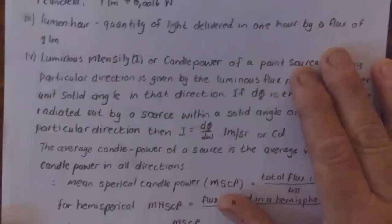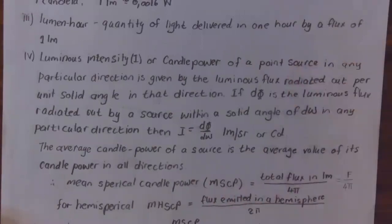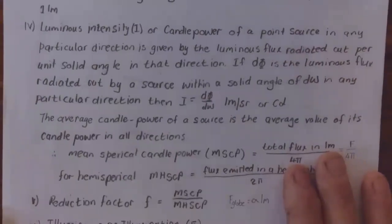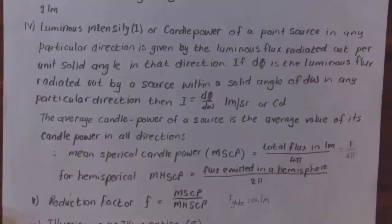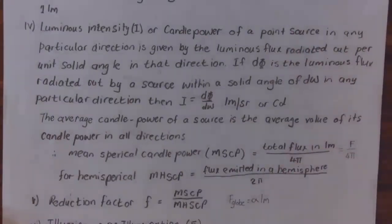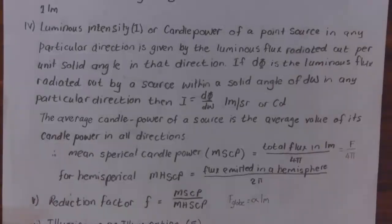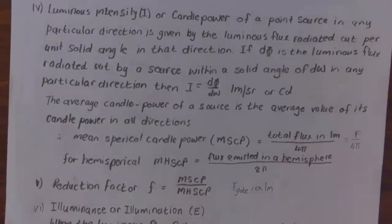Lumen hour is the quantity of light delivered in one hour by a flux of one lumen. Luminous intensity I, or candle power of a point source in any particular direction, is given by the luminous flux radiated out per unit solid angle in that direction. If dφ is the luminous flux radiated out by a source within a solid angle dω in any particular direction, then I = dφ/dω, which is lumens per steradian or candela.